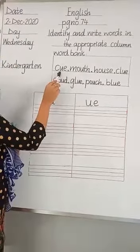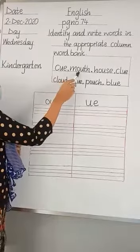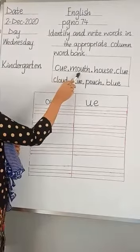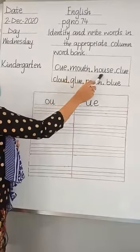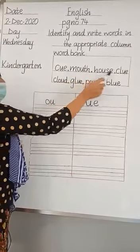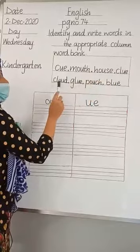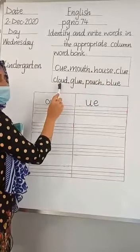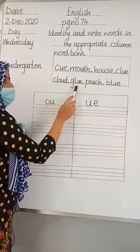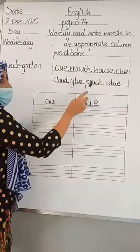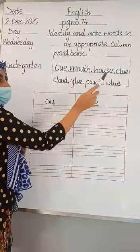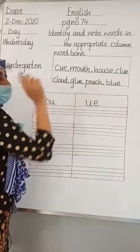The words in the word bank are: cube, mouth, house, clue, cloud, glue, pouch, and blue.